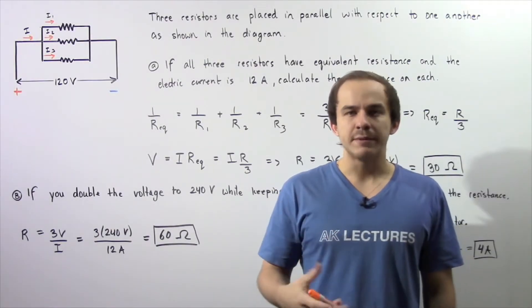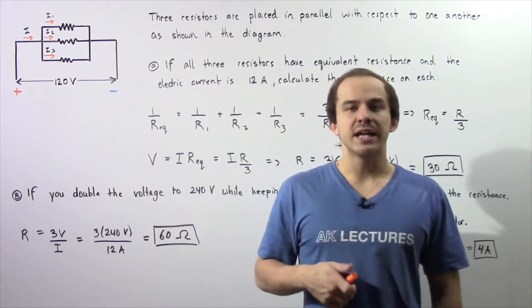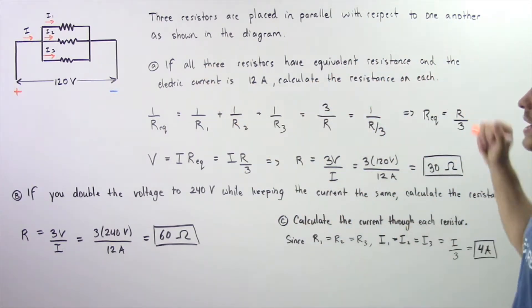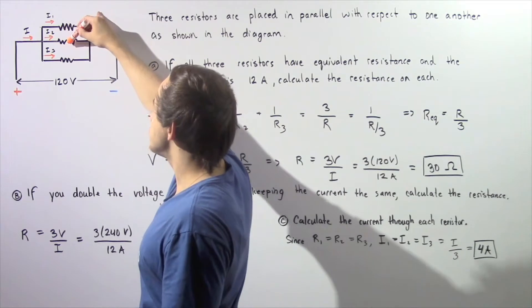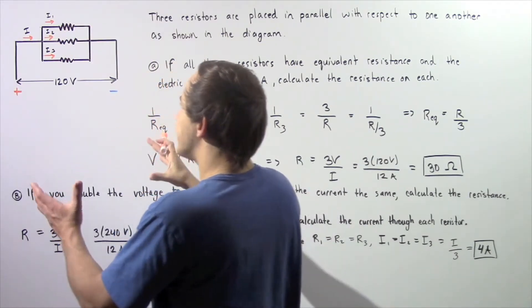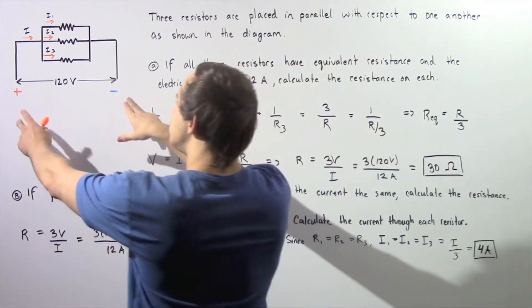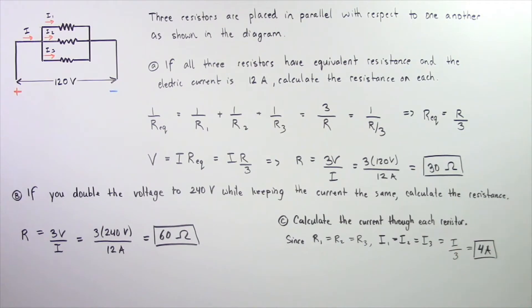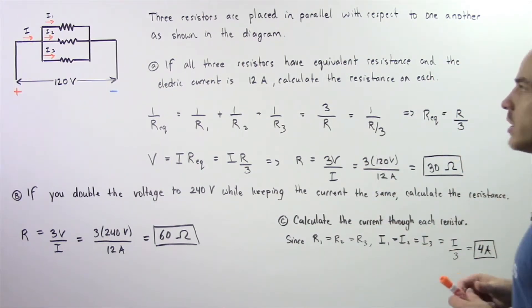In the previous lecture, we described connecting our resistors in parallel with respect to one another. Now let's actually look at an example. Let's suppose three resistors are placed in parallel with respect to one another as shown in the following diagram. So we have resistor 1, resistor 2, and resistor number 3 connected in parallel. We have a closed electric circuit and the voltage is given to be 120 volts. In part A, if all three resistors have equivalent resistance and the electric current in our circuit is 12 amps, calculate the resistance on each one of our resistors.